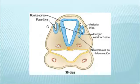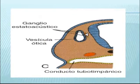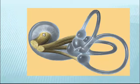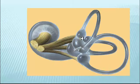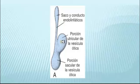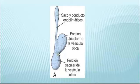Durante la formación de la vesícula ótica, un pequeño grupo de células se separa de su pared y forma el ganglio estatoacústico, al cual se le agregan células que se originan de la cresta neural. Este se divide en dos porciones, vestibular y coclear, que inervan las células sensitivas del órgano de Corti y a las células sensitivas de las máculas y las crestas que se encuentran en el laberinto. En la vesícula ótica pueden identificarse dos regiones que desarrollarán cada uno de los componentes del oído interno.